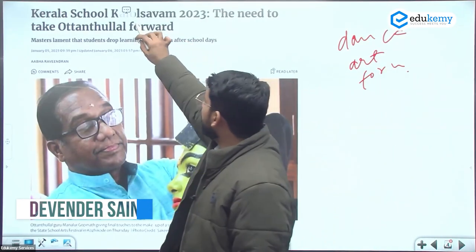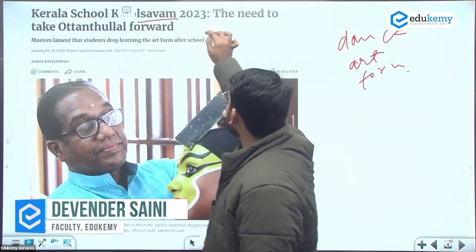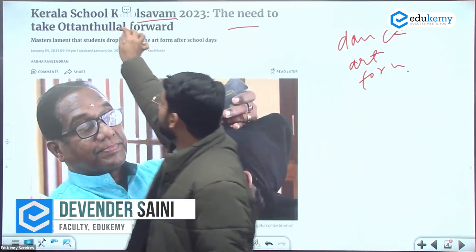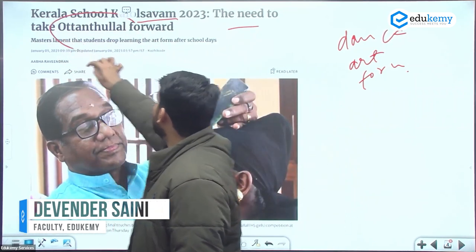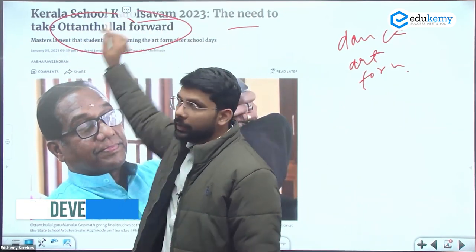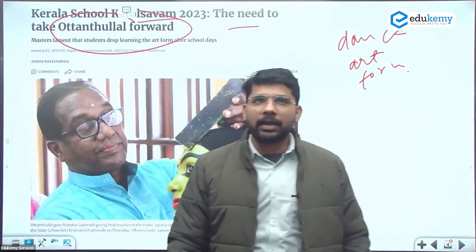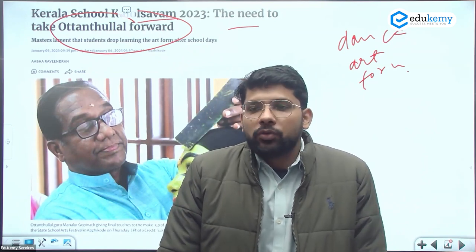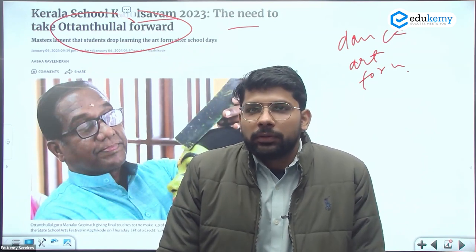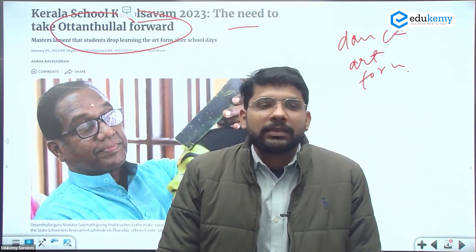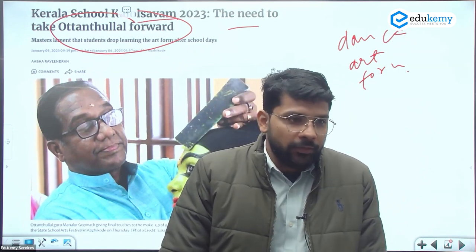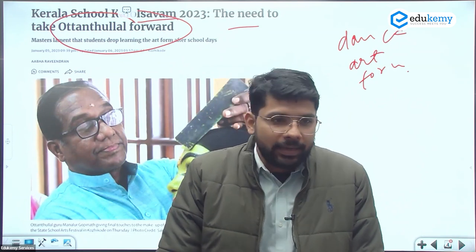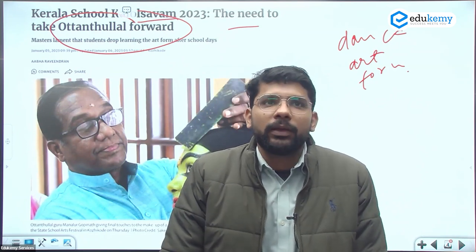Kerala school Kalolsavam 2023 — the need of the hour: Ottanthullal. It's an ancient dance art form in Kerala, and they are trying to promote these art forms for the future. Currently, there is a declining trend in this dance art form.